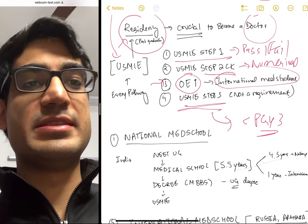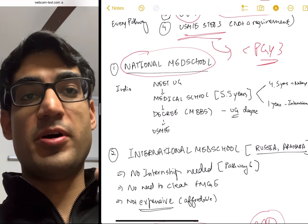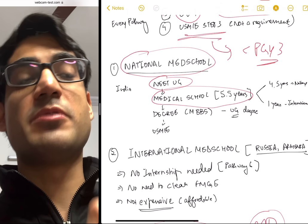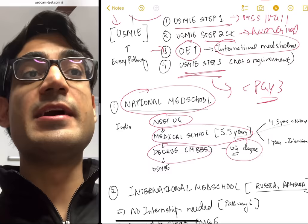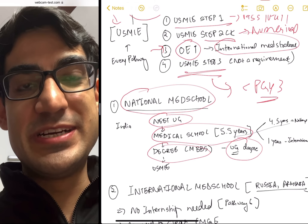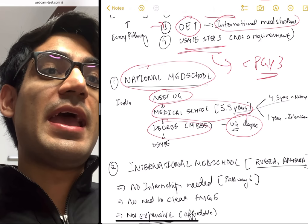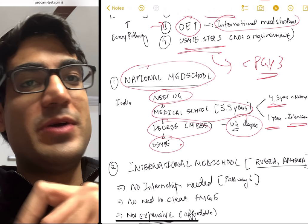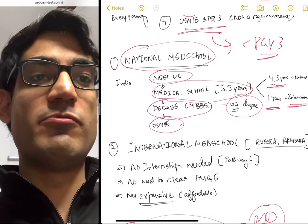Now let's explore the first pathway to become a doctor in America: going to your national medical school. For me, that's India. You write your pre-med exam, which is NEET-UG, then go to a medical school for about 5.5 years and get your MBBS degree. Remember, MBBS in India is an undergraduate degree. This requires about 4.5 years of studies and then one year of internship. After this, you can write your USMLE Step 1 and Step 2 and match into a residency in America.